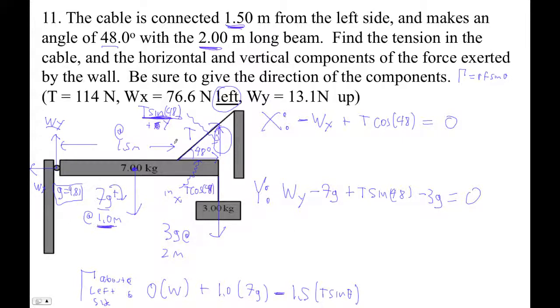Okay, so let's see. This guy's negative because it's anticlockwise. And then this guy will be, again, clockwise. Okay, so plus, how far out? That's 2. 2.0 times 3G is 0, okay?